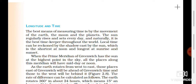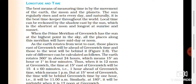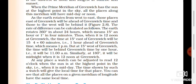When the prime meridian of Greenwich has the sun at the highest point in the sky, all places along this meridian have midday or noon. As the Earth rotates from west to east, those places east of Greenwich will be ahead in time and those to the west will be behind.